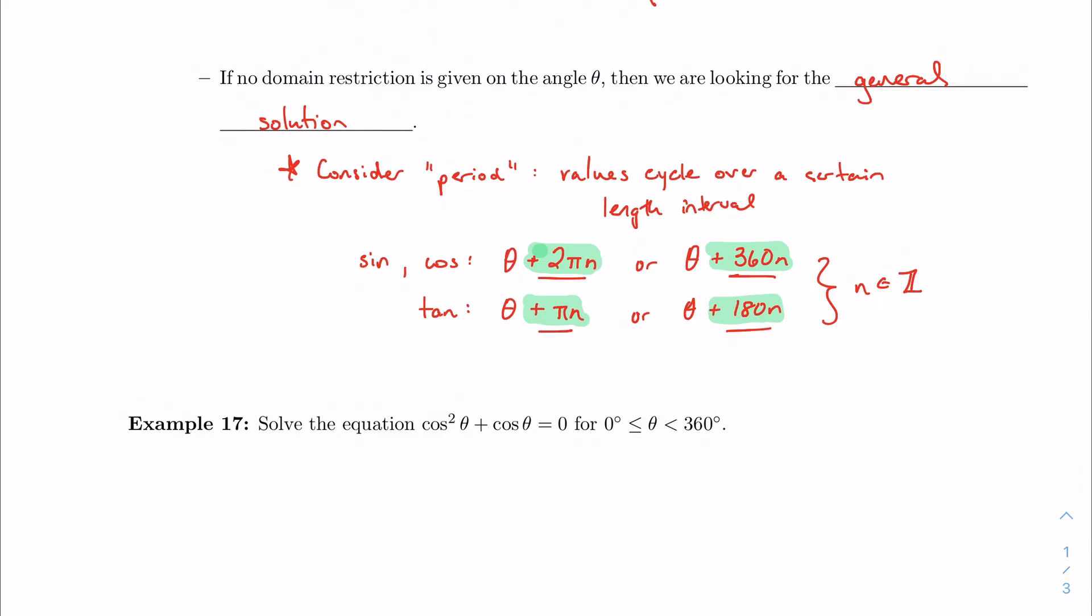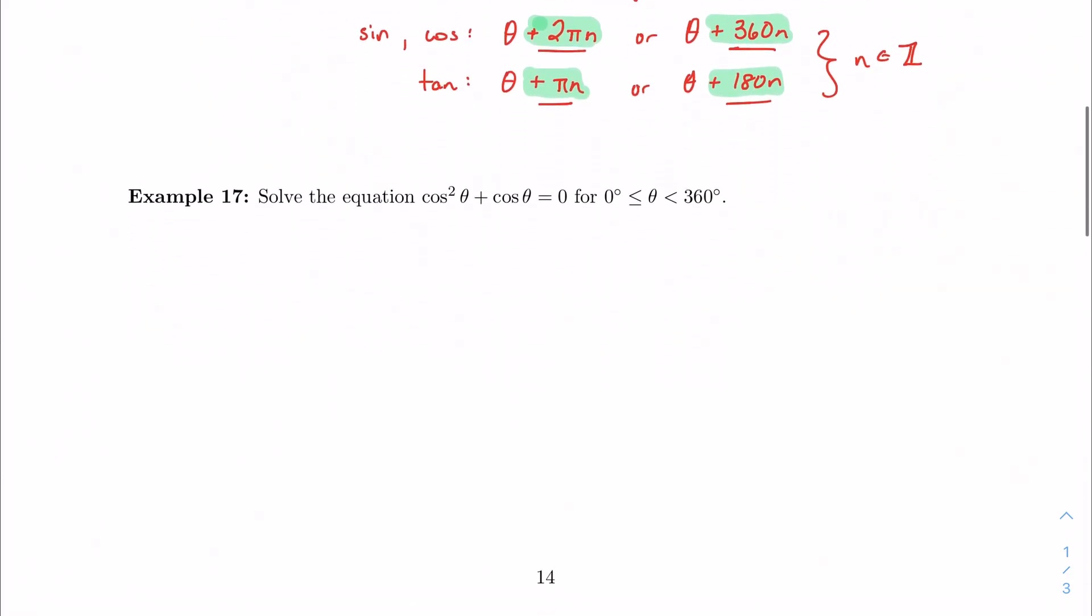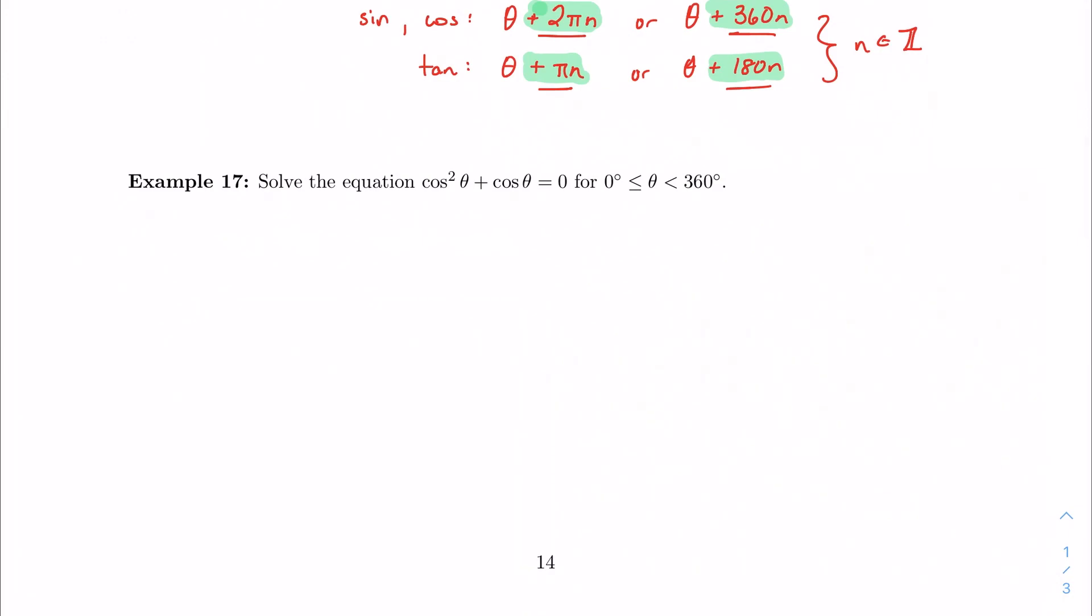For the most part, we're going to be dealing with particular solutions, but just in case you come across a general solution problem, I want to make sure you've at least seen it before. So all of our equation-solving strategies still apply. Solve the equation given here, cosine squared plus cosine equals 0, for all values of theta between 0 and 360 degrees. So particular solutions, our answers that we get are our only answers.